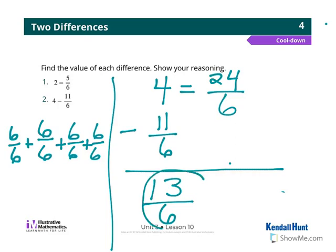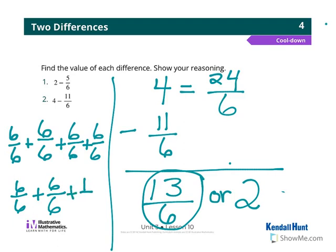Now, I could leave it as 13 sixths, or I can write the equivalent fraction. So if I'm thinking about 13 sixths, I know 6 sixths is 1 whole. Oh wait, 6 sixths is 1 whole, but we have 13. Oh, we've got 2 wholes in there. So 6 plus 6 is 12, and then I would need 1 more sixth to make 13. So my answer could be 13 sixths, or 2 and 1 sixth.